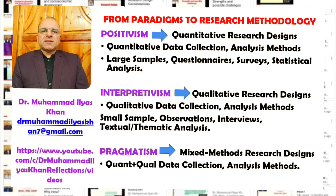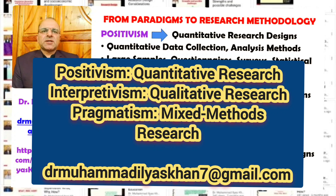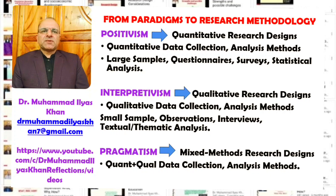Pragmatism is represented by the use of mixed-method research designs, where there is a mix of both quantitative and qualitative methods. Because these designs have two sides, there are two types of samples: the quantitative part will have larger samples, while the qualitative part will have smaller samples. There is generally a combination of both quantitative and qualitative data collection and analysis processes.